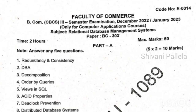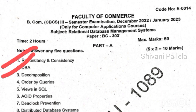We are discussing the RDBMS previous year question paper from 2022 to 2023. In the short questions, the first question asked about redundancy and consistency. Data redundancy means repetition of data — you need to write just that, five to six sentences is enough for two marks. Data consistency means only whatever data we need should be stored in the database. The second question is about DBA — database administrator — who looks into the database, storage, and everything.